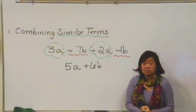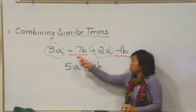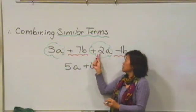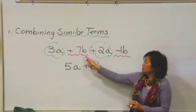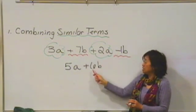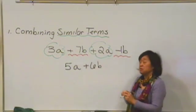So again, combining similar terms, you just make sure the variable parts are exactly the same and then you can combine the numbers in front. So 3 plus 2 is 5. Here the variable parts are exactly the same. 7 minus 1 is 6. So here, why don't you try this one?